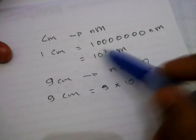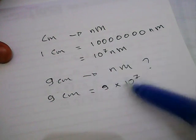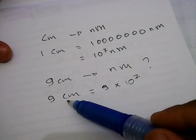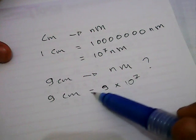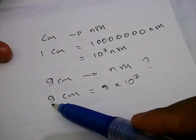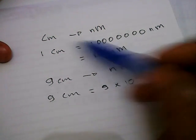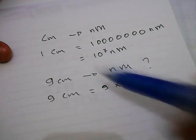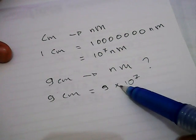In this case, 10^7. So 9 centimeters is equal to—we need to write this 9, just like we need to write this 1 here, and then we need to multiply this number by 10^7 nanometers.